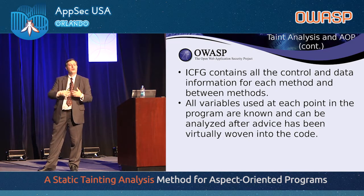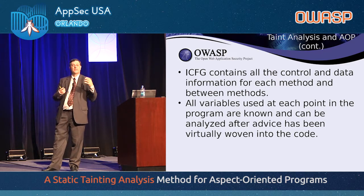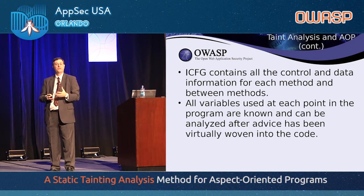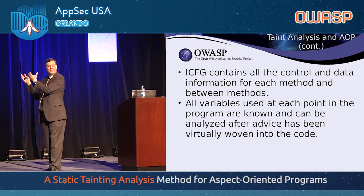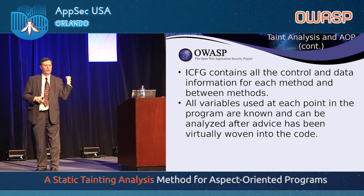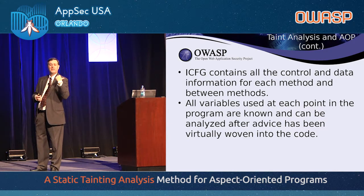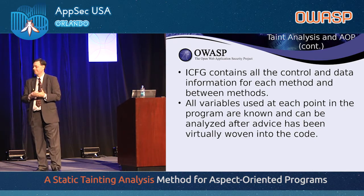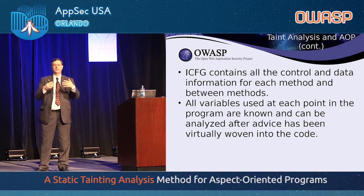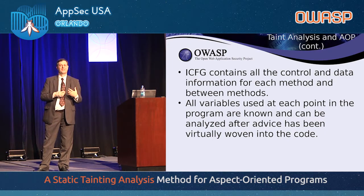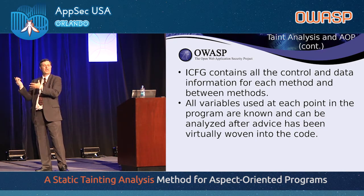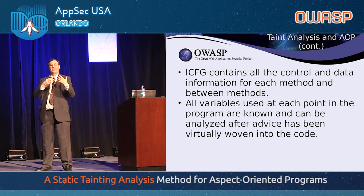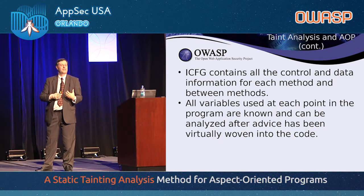All variables are known. Now this is a static process — there is still dynamic tainting that can be used, because sometimes there are things you can't figure out during static analysis. John Holt presented yesterday on some dynamic analysis using changes to the Java Virtual Machine runtime to do dynamic tainting analysis, which is very cool. The two are complementary — you really should have both, because you want clean source code and you want that extra backup of dynamic tainting.